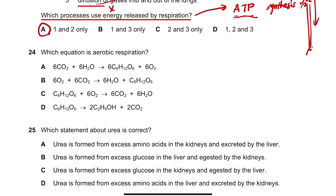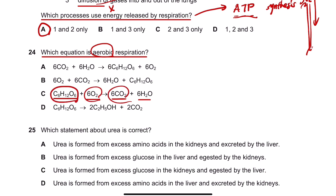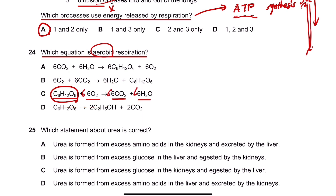Number 24. Which equation represents aerobic respiration? Aerobic respiration starts with glucose (C6H12O6) and requires oxygen. The reaction produces CO2 and H2O. All components need to be balanced — they all have six moles each. So the answer is C.